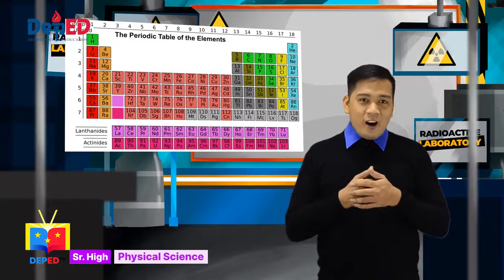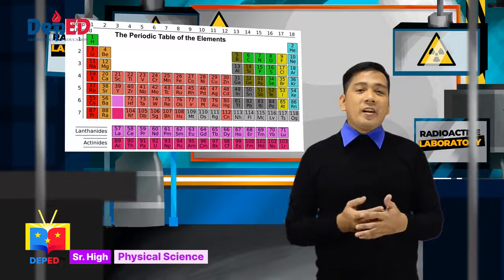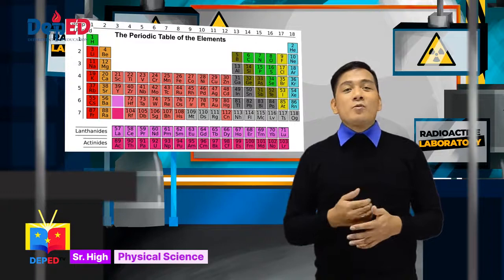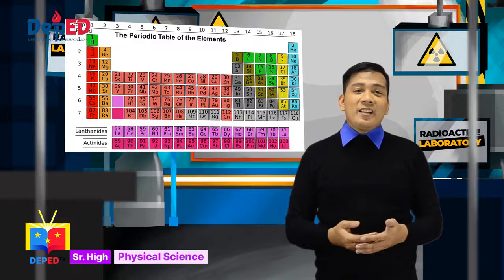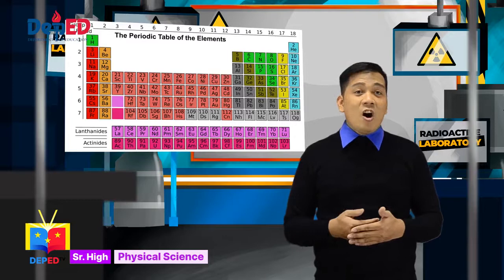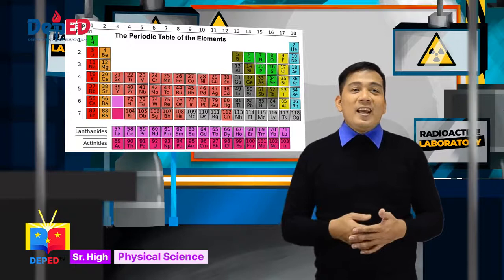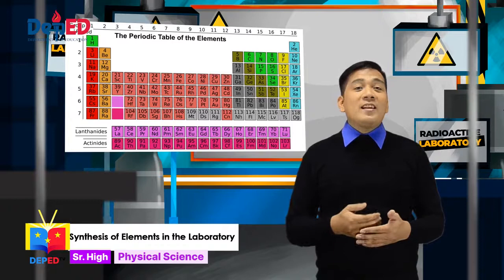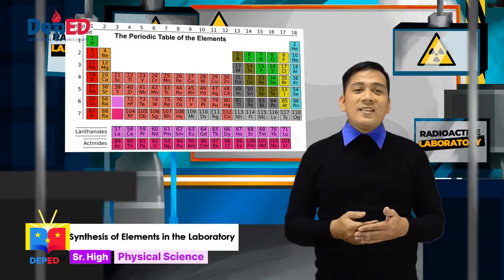Elements heavier than element 103 are considered super-heavy elements. They are usually produced and synthesized by bombarding heavy nuclear targets with heavy projectiles. For example, the most recently synthesized element is tennessine. It was prepared by the bombardment of berkelium with calcium. The heaviest element known so far is element 118, oganesson. It was made through the bombardment of californium with calcium. If you want to create elements heavier than oganesson, you can try to bombard calcium with einsteinium. But the problem is the scarcity of einsteinium. We are yet to see what new elements will be synthesized in the laboratory.